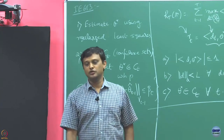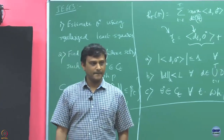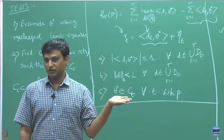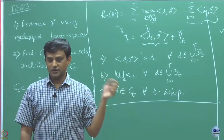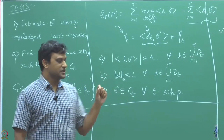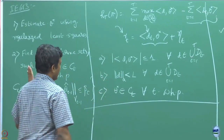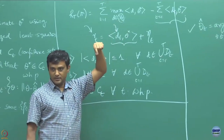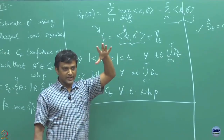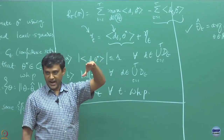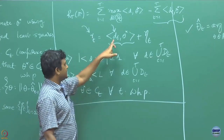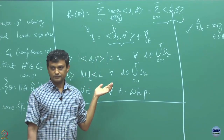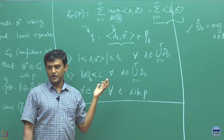Now how to make a decision in every round based on this information: in every round a decision set D_t is revealed. Looking at D_t I have to decide which element — the small d_t — from that set I am going to play.